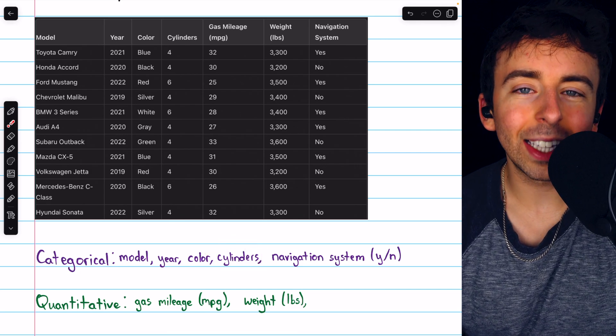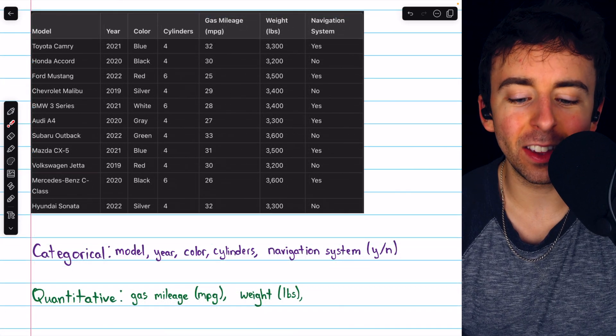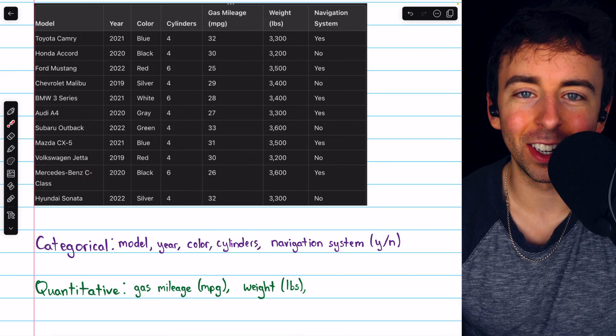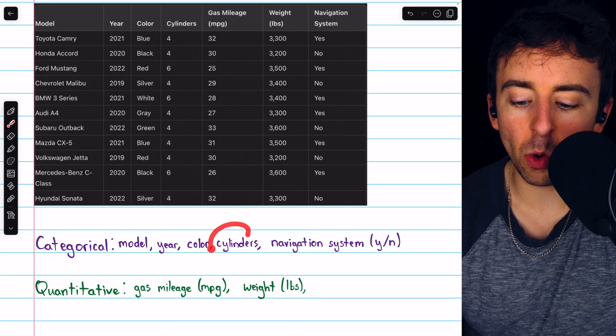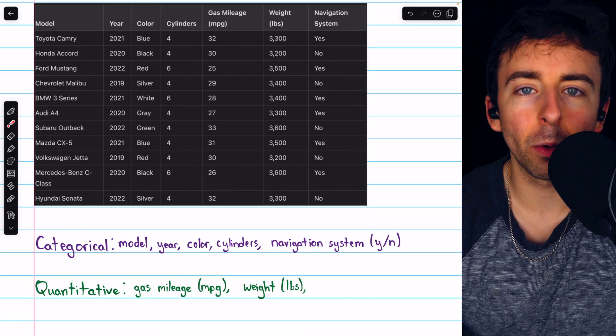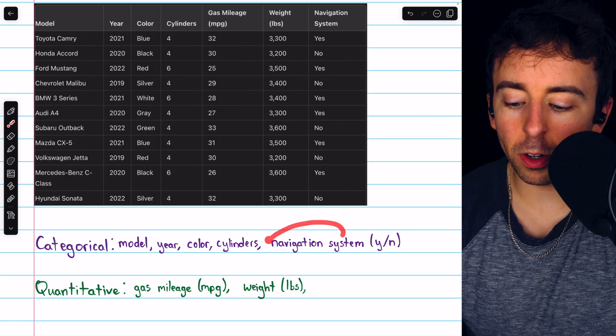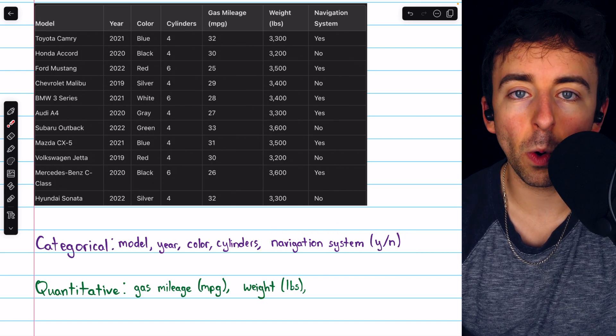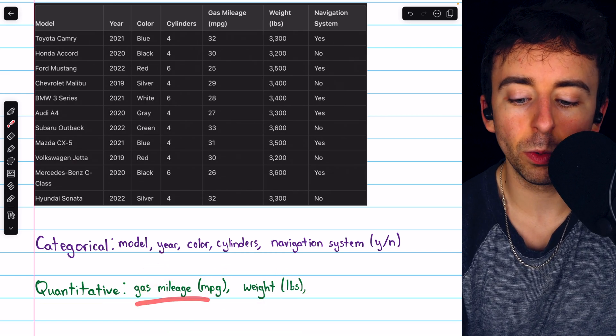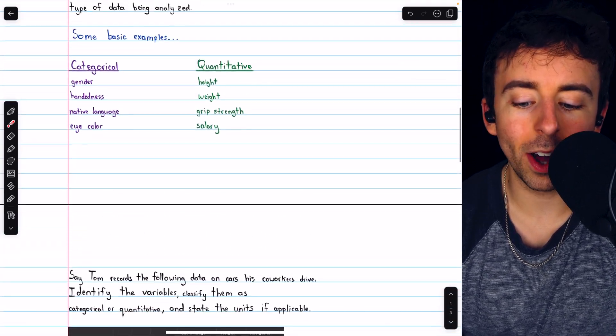The number of cylinders, while it is quantifying something, would typically be treated as a categorical variable. It's unlikely that we or Tom or anyone would be calculating the average number of cylinders in some set of cars. If it's difficult to imagine cylinders as a categorical variable, you can also think of it as just measuring levels of power. We have a few different categories of power levels based on the number of cylinders in the vehicle. And whether or not a car has a navigation system, of course, is categorical. The quantitative variables were pretty obvious with units given in the table. Gas mileage, which is in miles per gallon, and the weight of the car, which is in pounds.